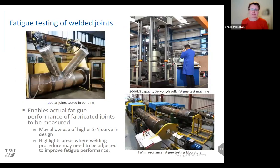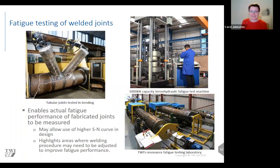The fatigue performance of welds depends on many factors relating to fabrication as well as geometry. As well as the actual geometry of the joint and the orientation of applied stresses with respect to the weld, it also depends on how the weld has been fabricated. In order to have confidence in the actual fatigue performance, it's a good idea to carry out tests on representative welds. Those test results might show that the weld has a higher fatigue performance than the standard design SN curve, enabling the designer to justify a longer lifetime. But if performance is shown to be lower, you can adjust and modify welding procedures to improve fatigue performance before deploying the component offshore.